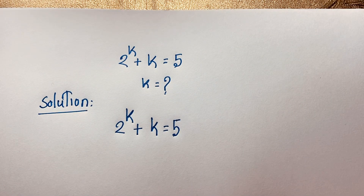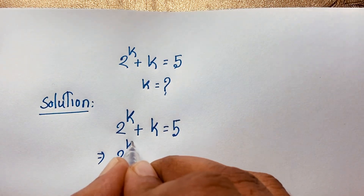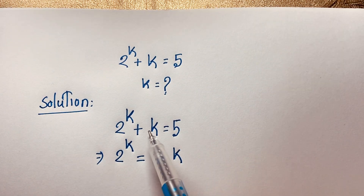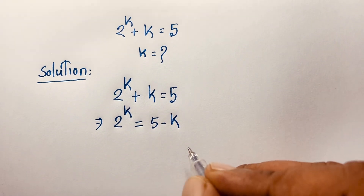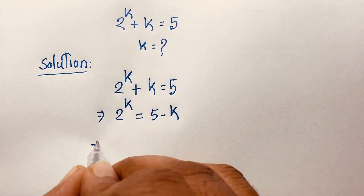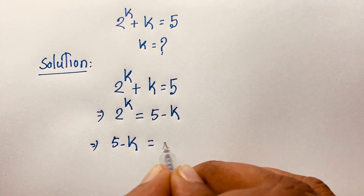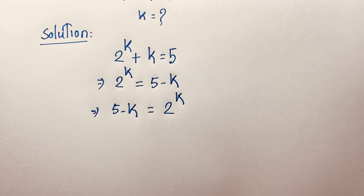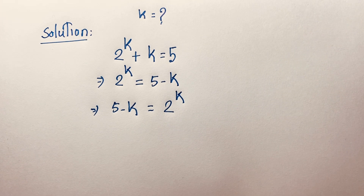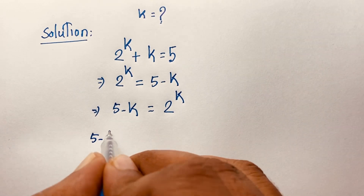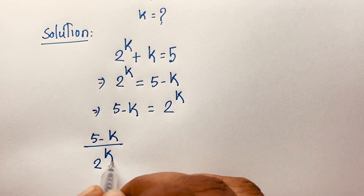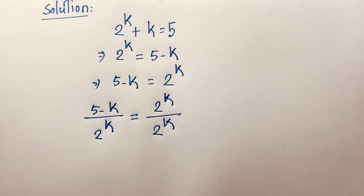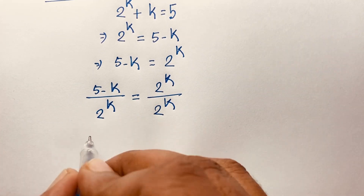Now we rearrange: 2 to the power k is equal to 5 minus k — I just move k to this side so it becomes negative k. So 5 minus k is equal to 2 to the power k. Now I divide both sides by 2 to the power k, giving us (5 minus k) divided by 2 to the power k is equal to 1.